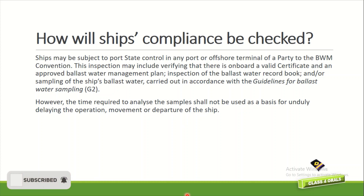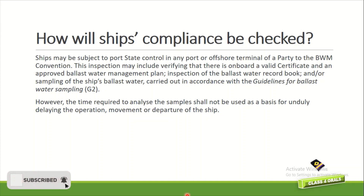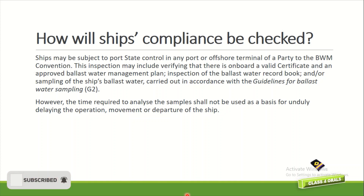How will ships be checked for compliance? Ships may be subjected to port state control in any port or offshore terminal of a party to the BWM Convention. This inspection may include verifying a valid certificate and approved ballast water management plan on board, inspection of the ballast water record book, and sampling of the ship's ballast water carried out in accordance with the guidelines for ballast water sampling (G2). However, the time required to analyse samples shall not be used as a basis for unduly delaying the operation, movement, or departure of the ship.